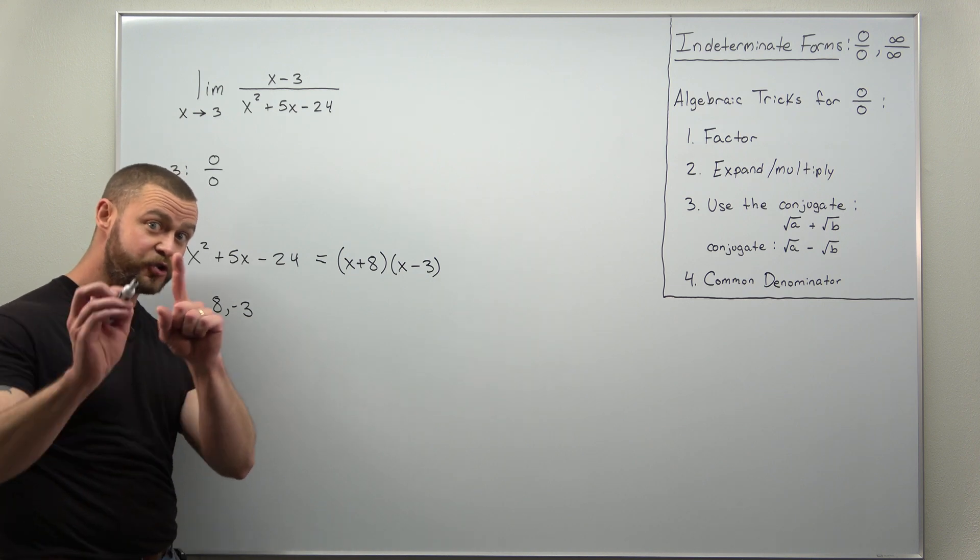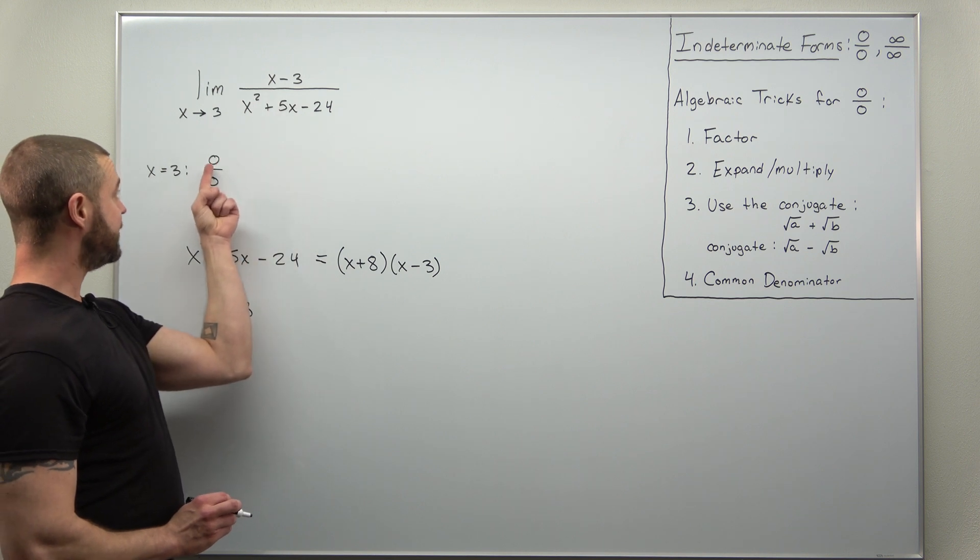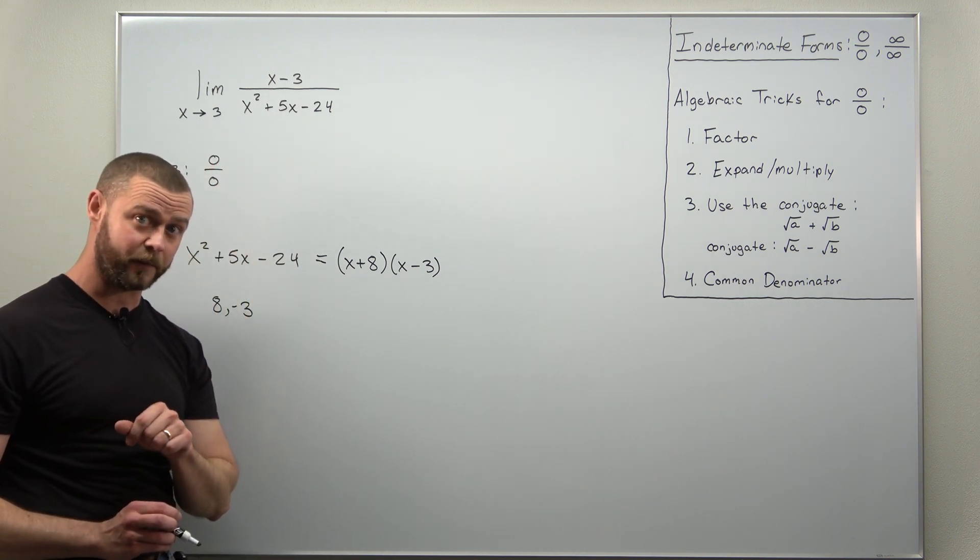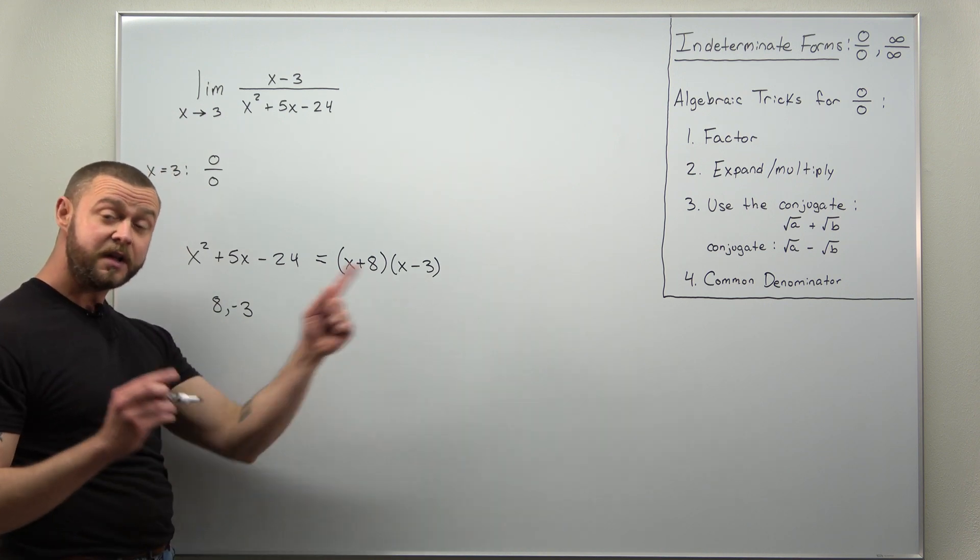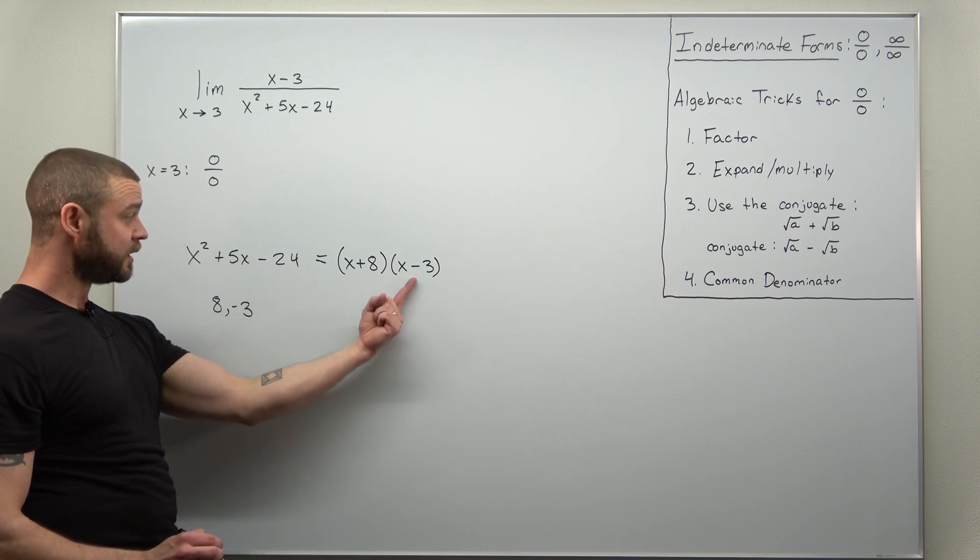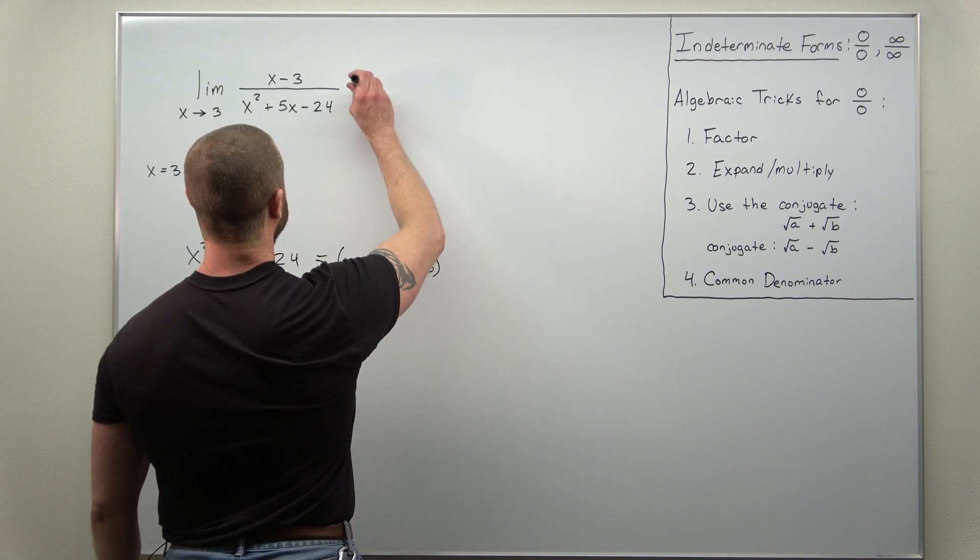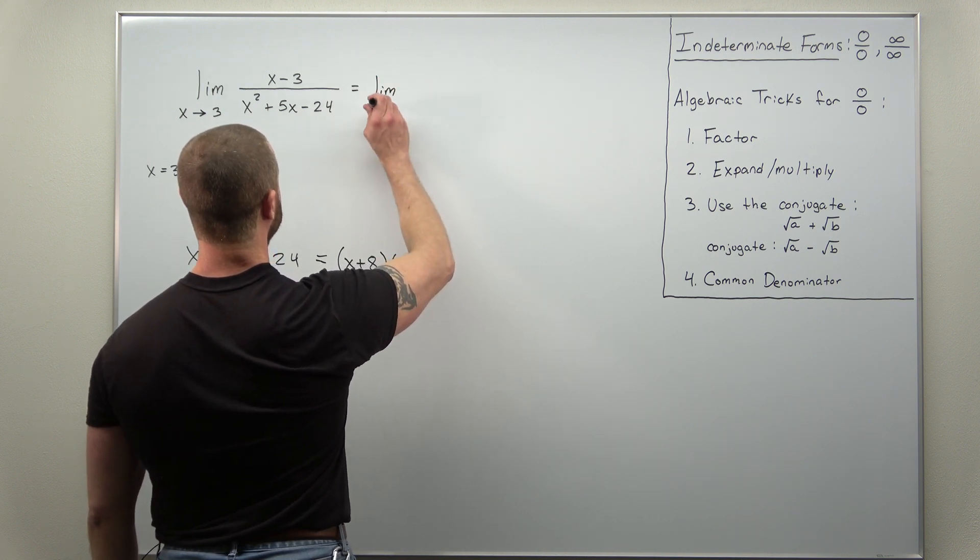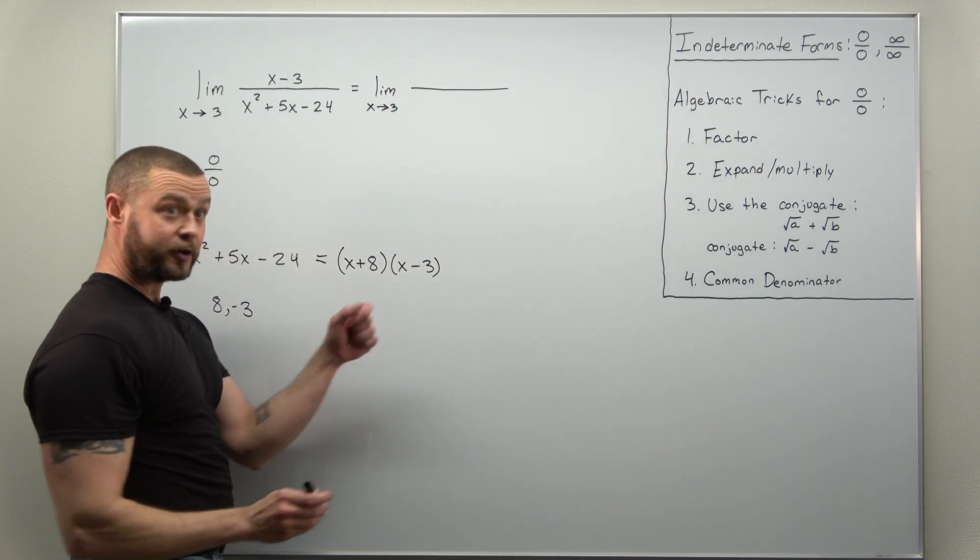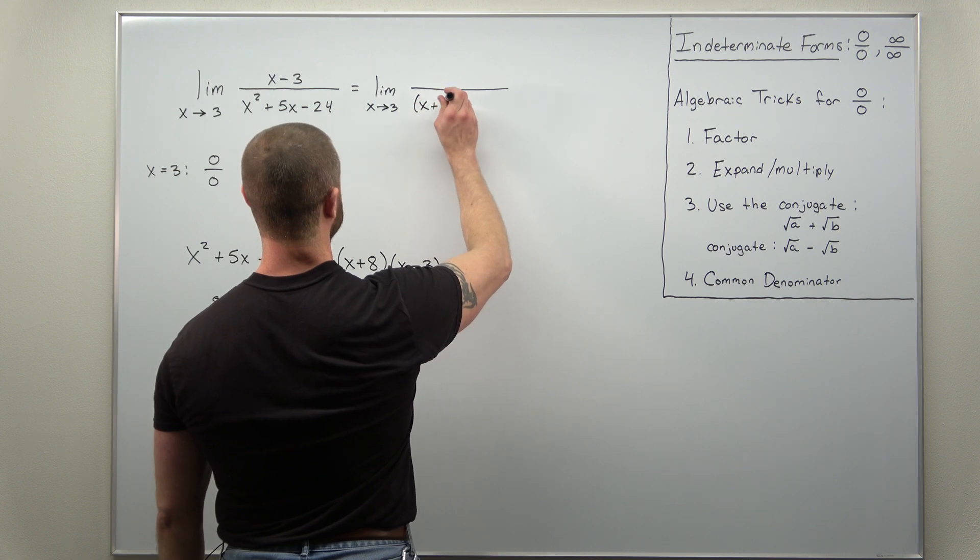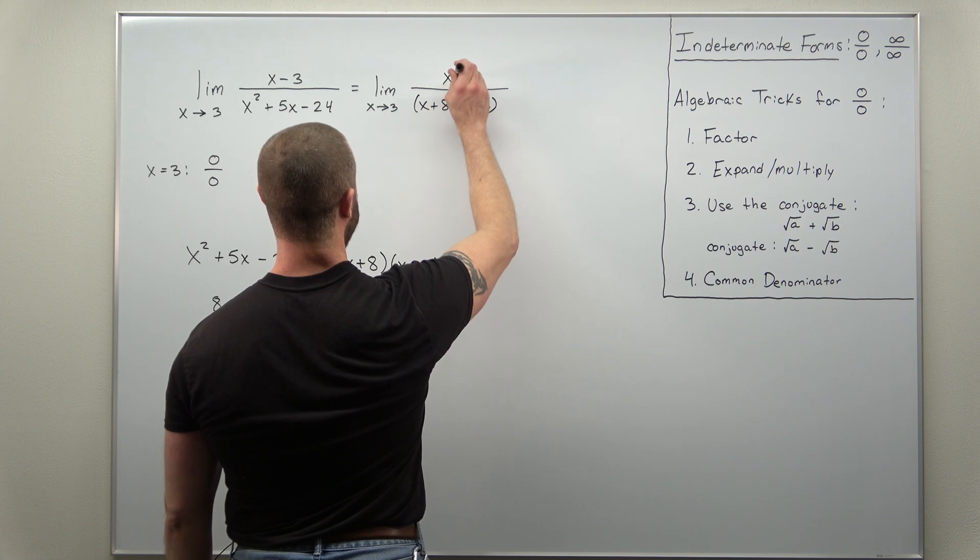Now the factorization here shouldn't really be a surprise. Notice we have x minus three in the numerator, that's what gives you zero for this indeterminate form, and we're going to try to have that cancel out. So maybe it's obvious that you would want an x minus three factor in your denominator, which we have. So if we go ahead and put this in we're still evaluating the limit as x approaches three. We factored our denominator as x plus eight times x minus three and the numerator we're leaving that as is.